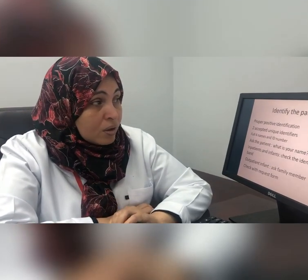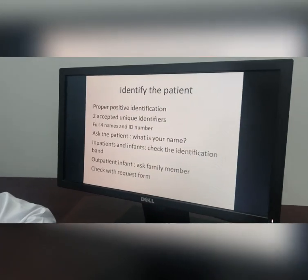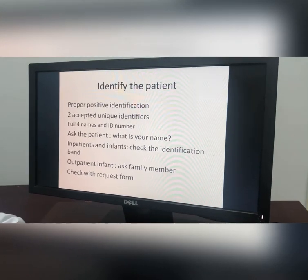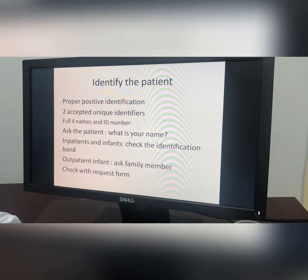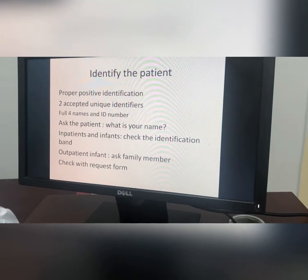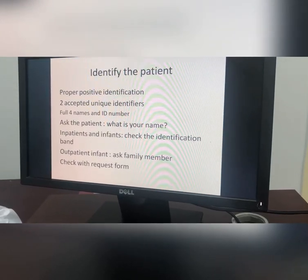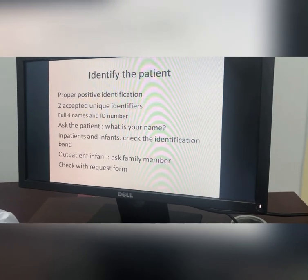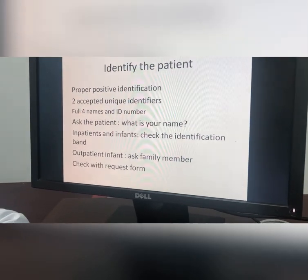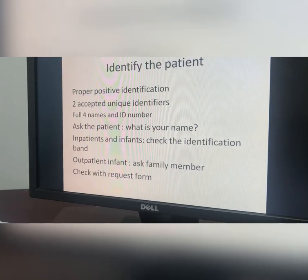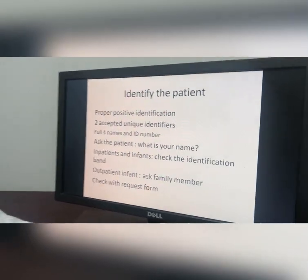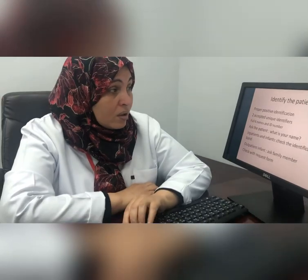The first and very important step: you should identify the patient. We have two accepted unique identifiers in our hospital. The first is the full four names and the ID number. You should use proper positive identification and involve the patient in the identification process — ask him about his name. For inpatients and infants, check the identification band and ask a family member. Check the patient's name and identification with the request form, which must be identical to the patient identification.